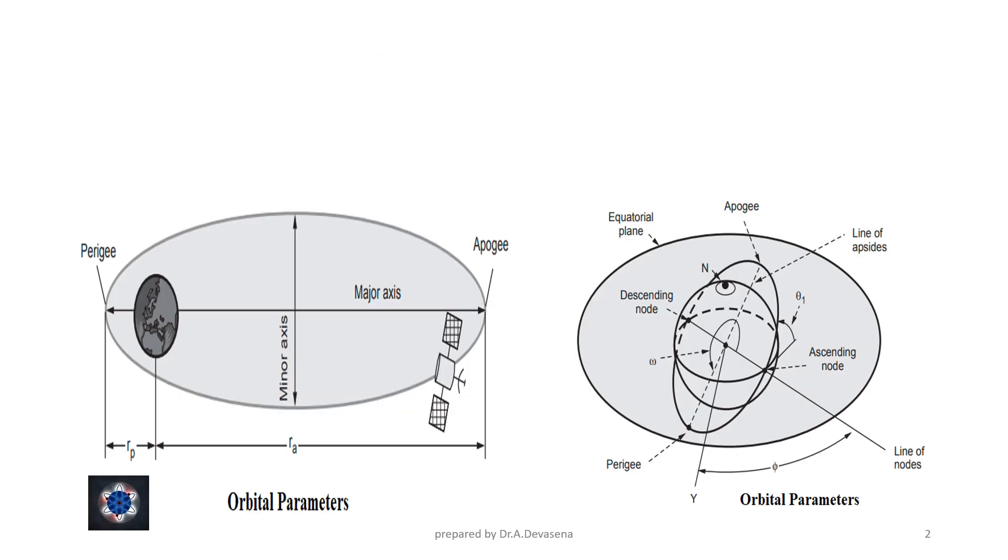The figure shows two perspectives useful in describing the important orbital parameters used to define Earth-orbiting satellite characteristics.